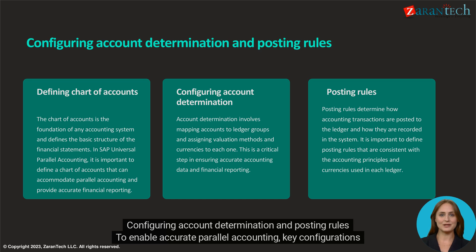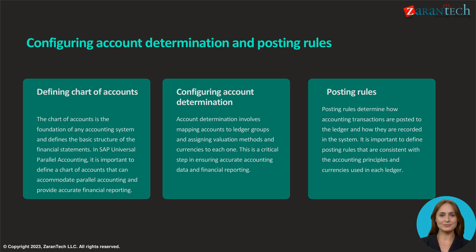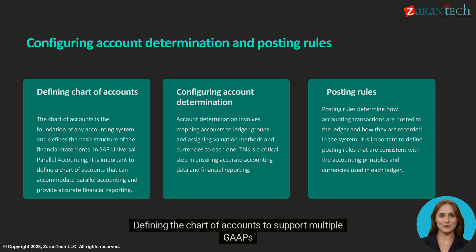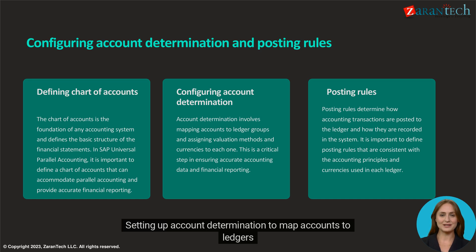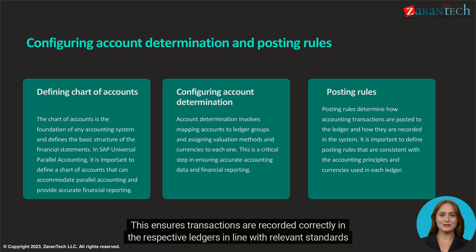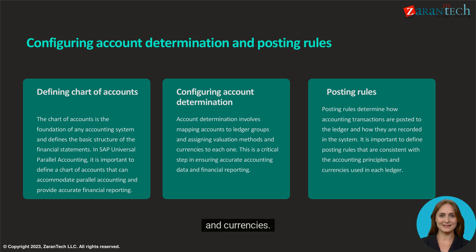Configuring account determination and posting rules enables accurate parallel accounting. Key configurations include defining the chart of accounts to support multiple GAAP, setting up account determination to map accounts to ledgers, and configuring posting rules for each accounting principle. This ensures transactions are recorded correctly in the respective ledgers in line with relevant transactions and currencies.